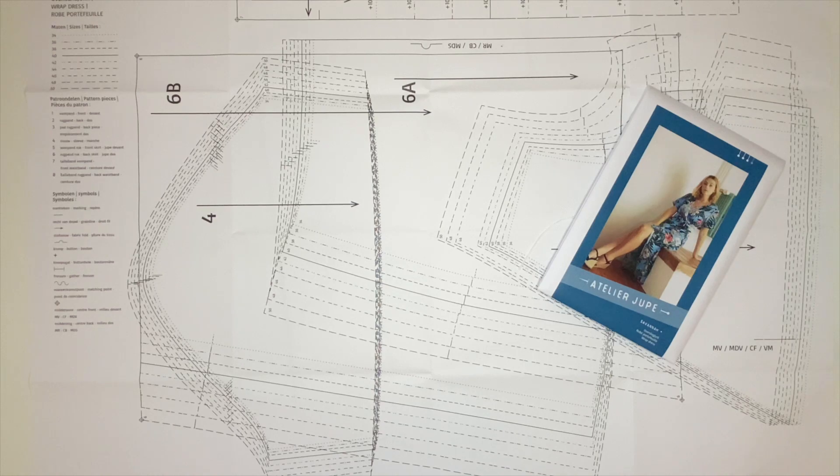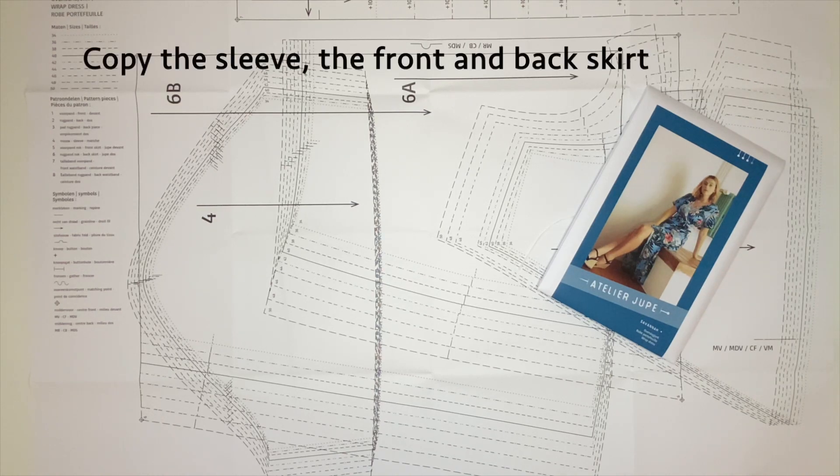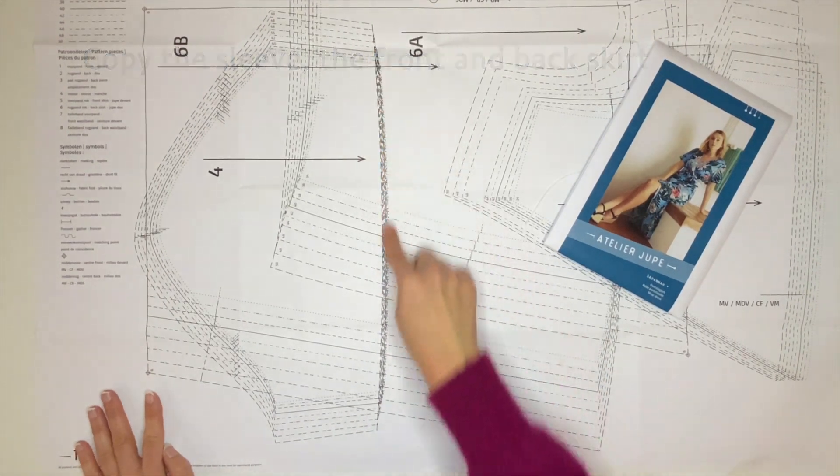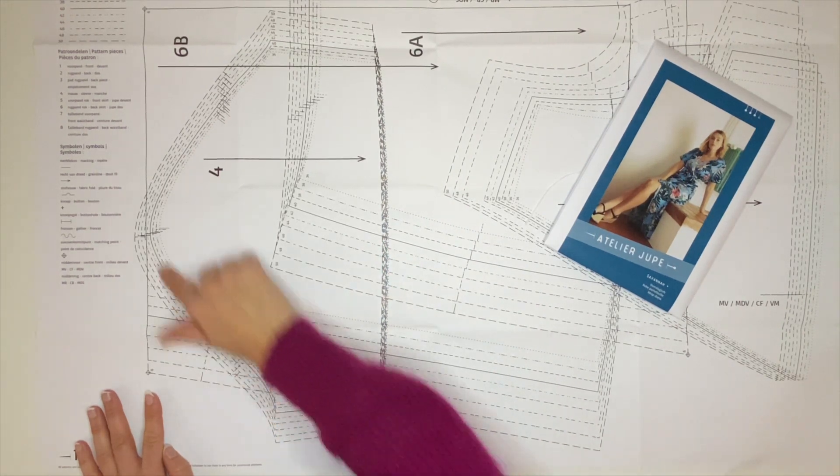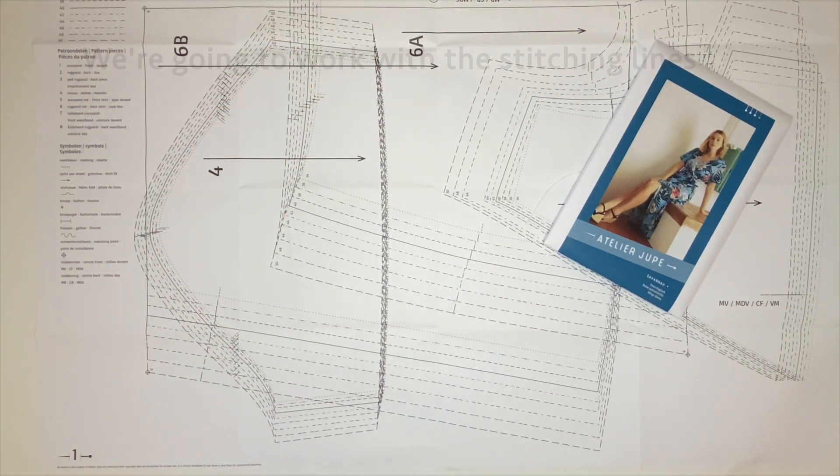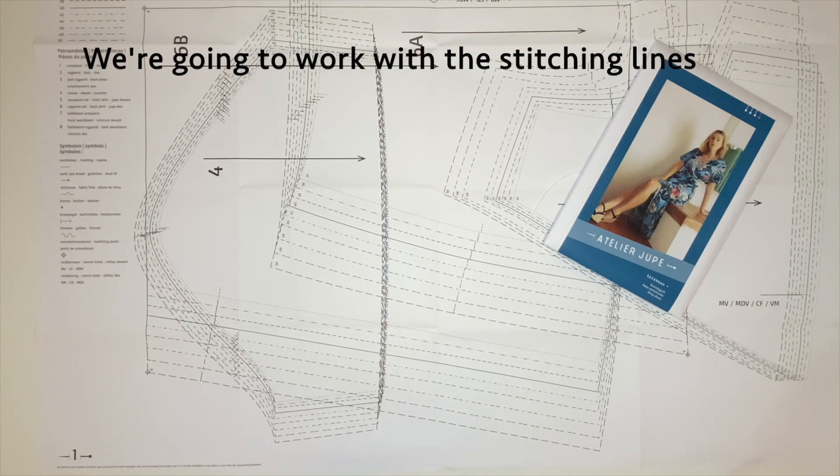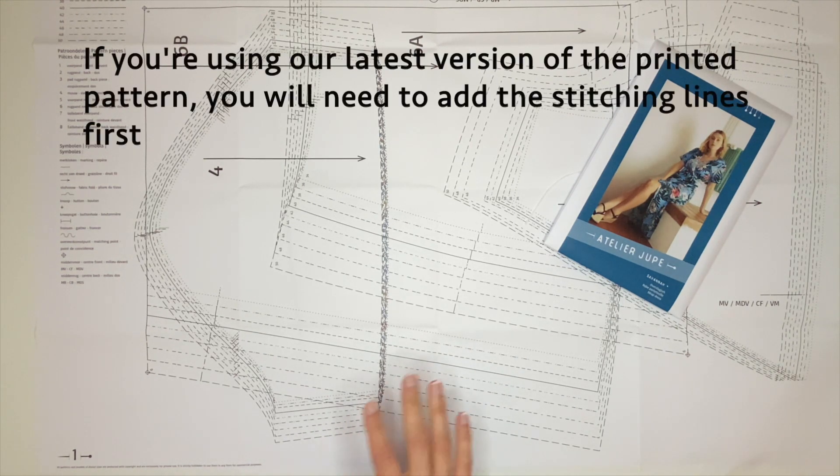We will start by copying the pattern pieces, the sleeve and the front and back skirt. For the sleeve you don't need to copy the hem, you can just copy the side seams and the sleeve head. We're going to work with the stitching lines, so if you have our latest printed pattern, it's the one with seam allowance, you will need to add the stitching lines yourself.